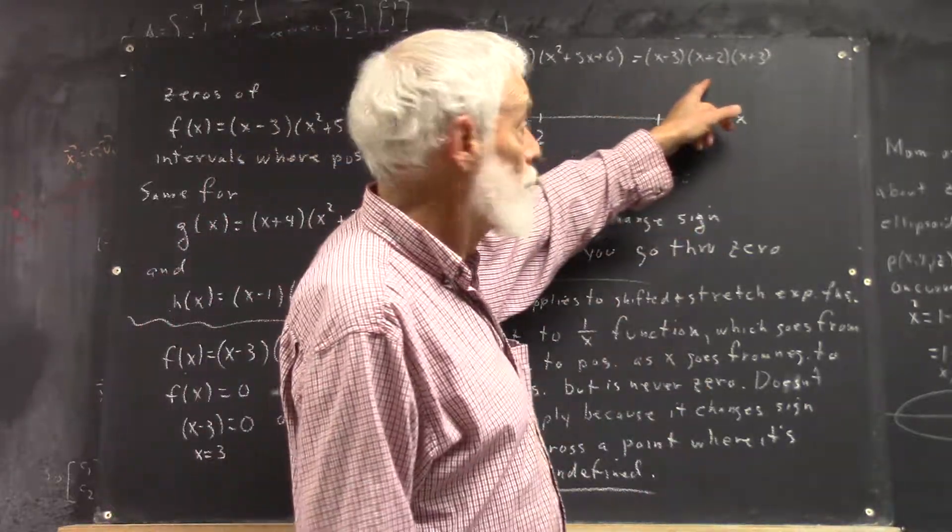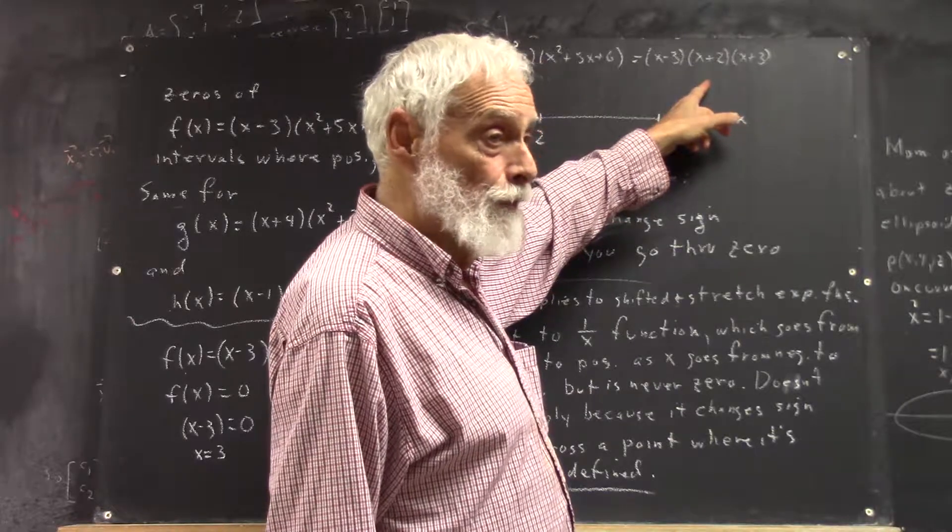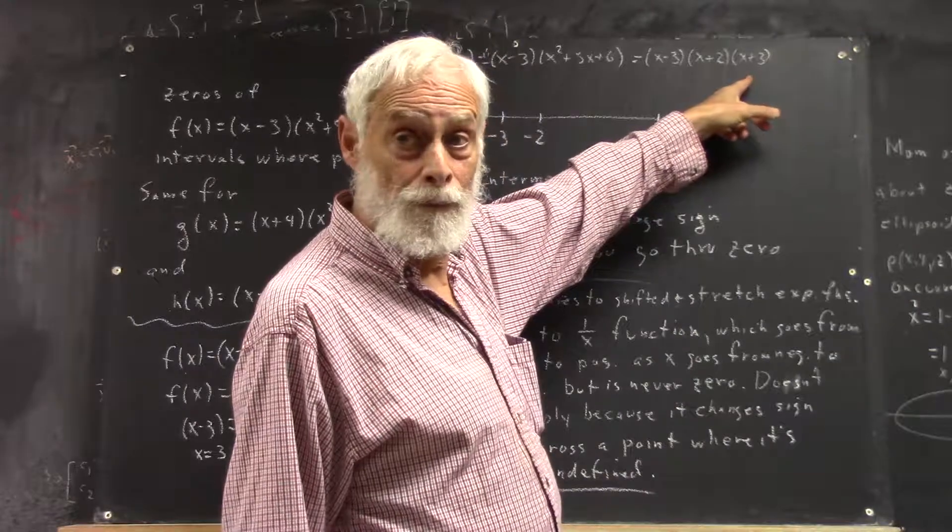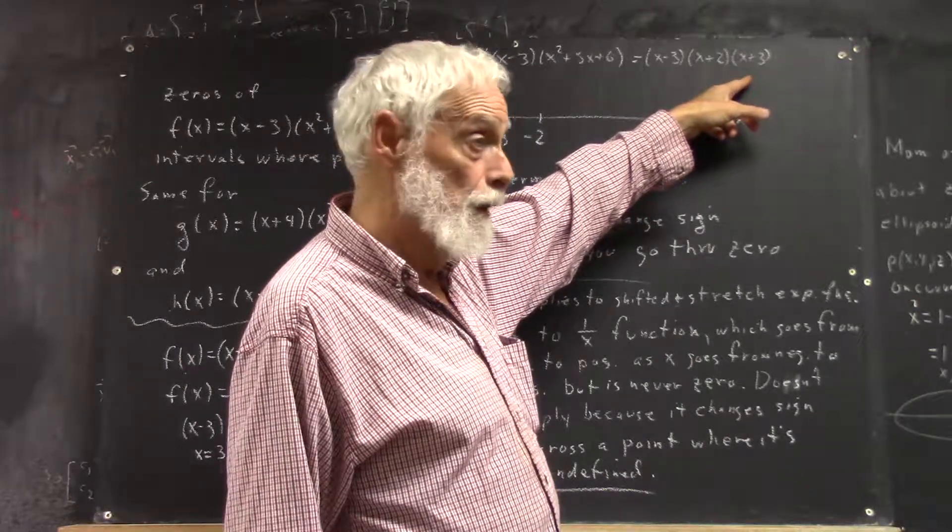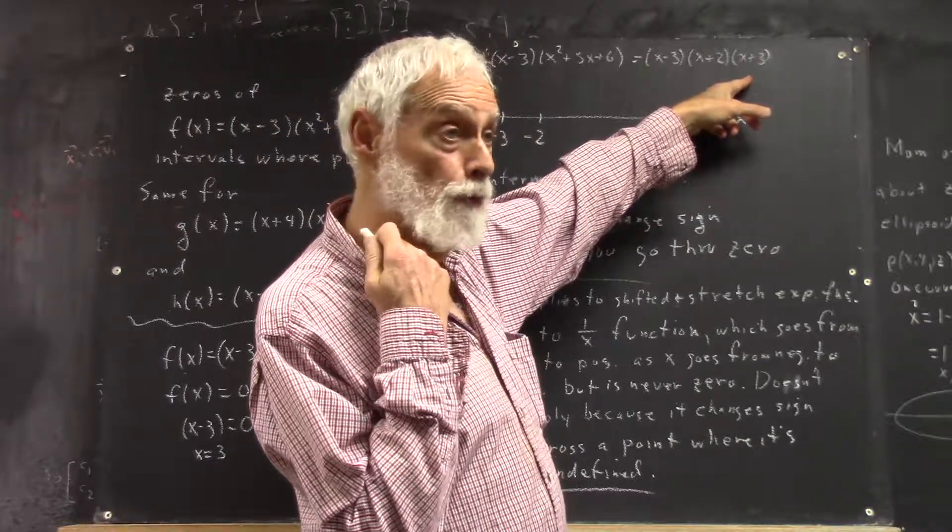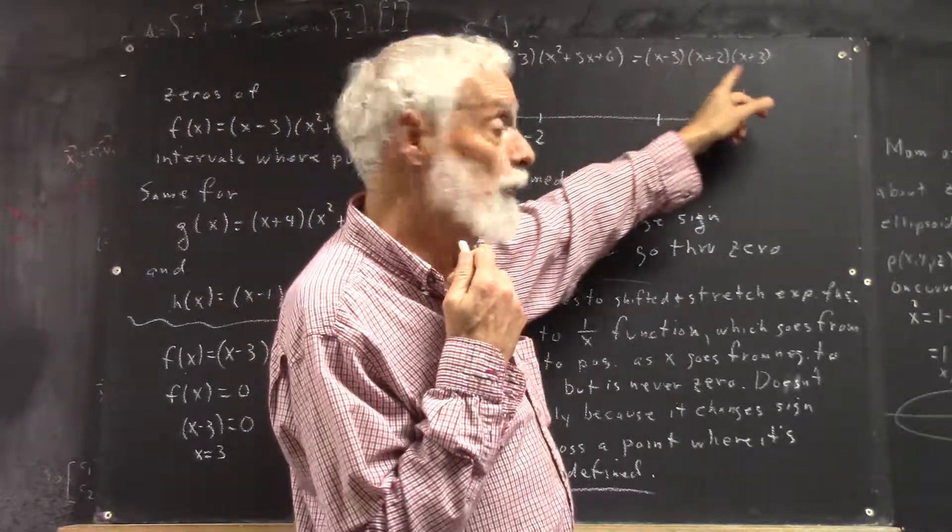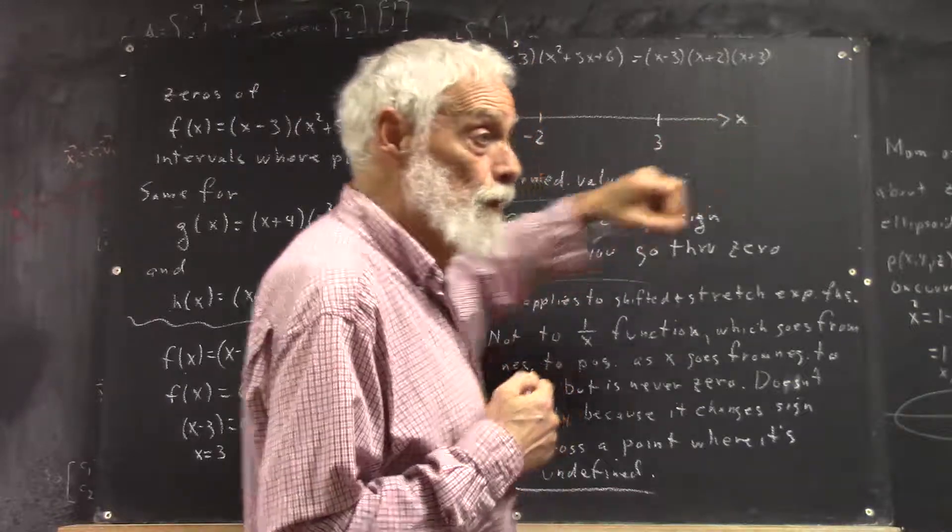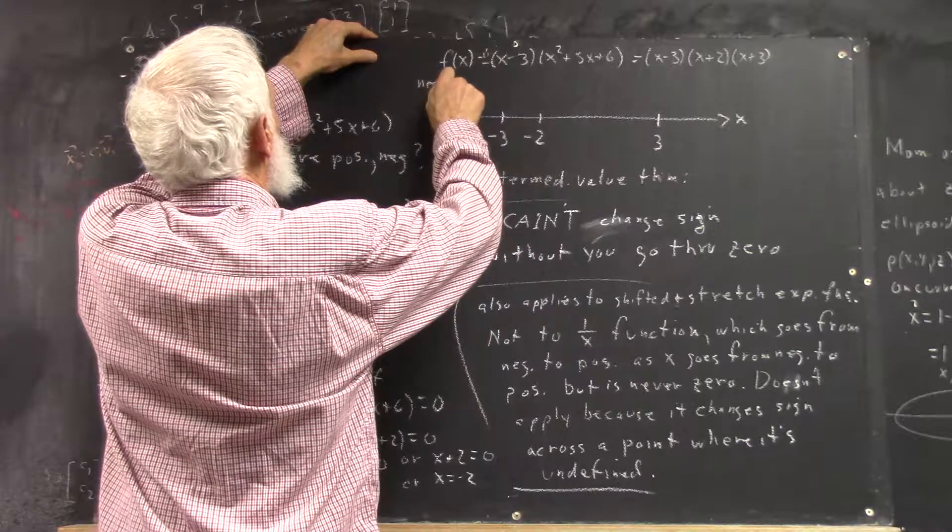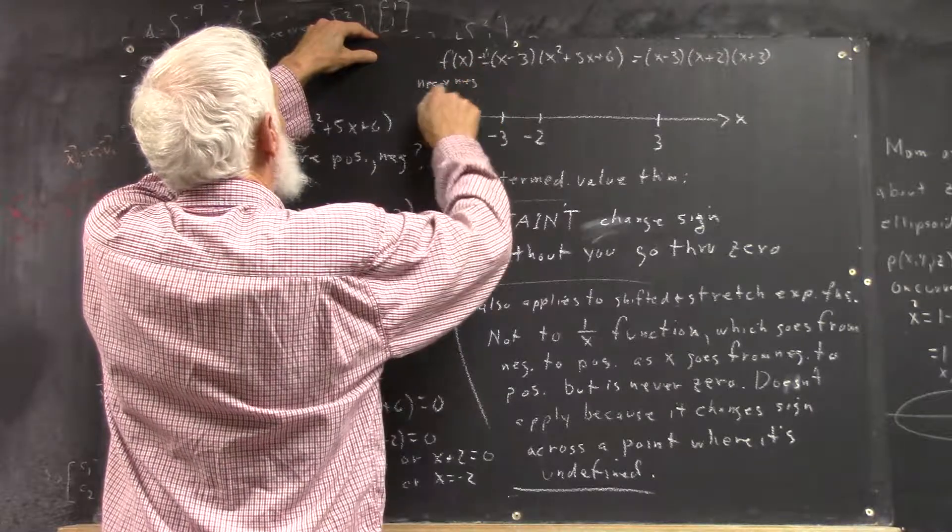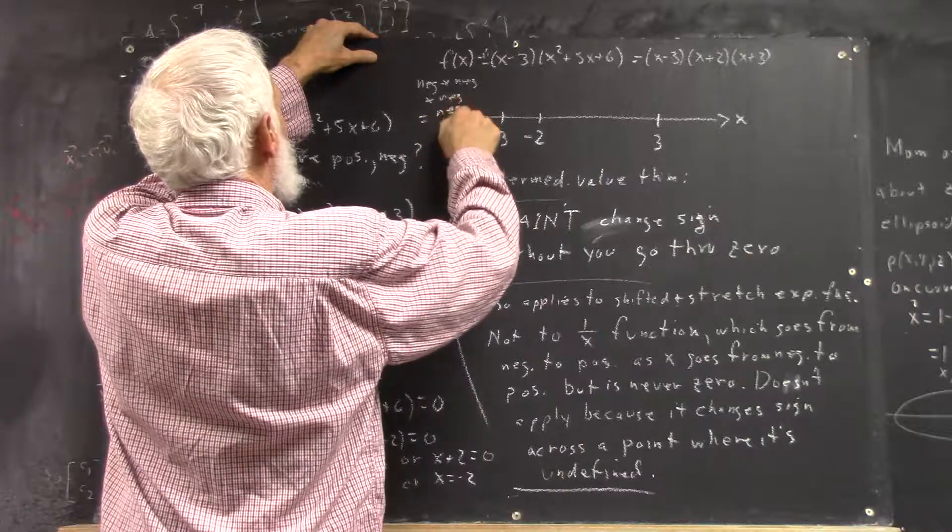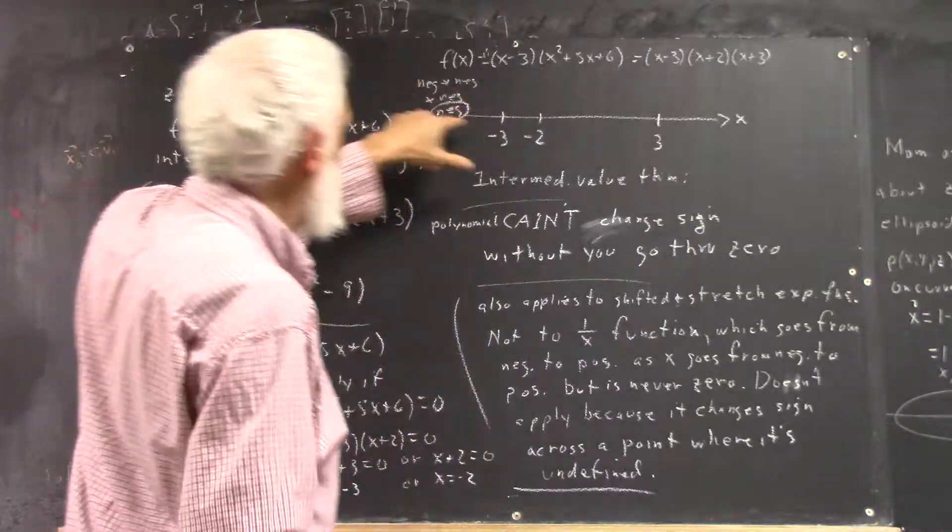So this is negative, this is negative, right? And if x is less than negative 3, what about x plus 3? Pick a number less than negative 3. What do you get? Negative 4 gives you negative 1. Negative, negative, negative. It's negative on this interval.